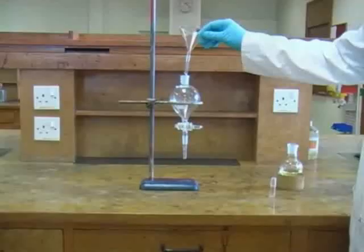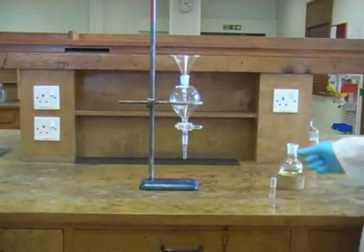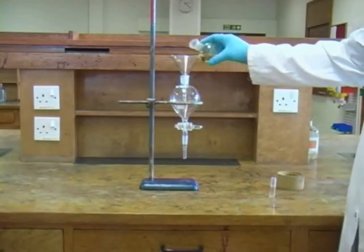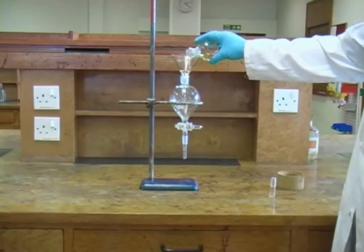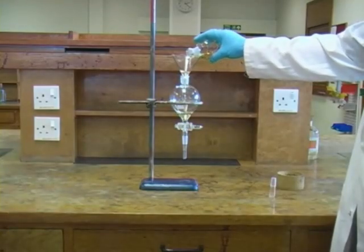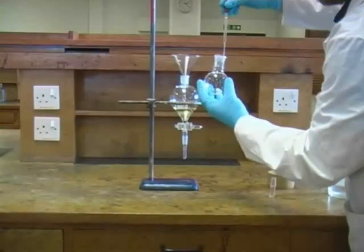We now need to pour the solution of our product into the separating funnel, taking care to avoid any spillages, so it's wise to use a small glass funnel as we pour. Then we can rinse our reaction flask with more ether to ensure that no product is lost.